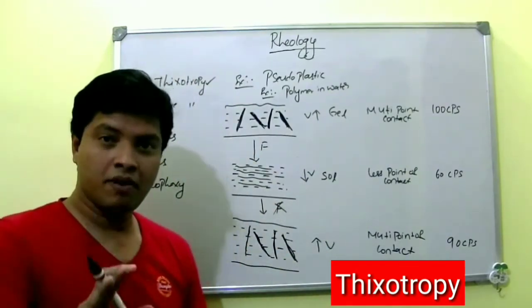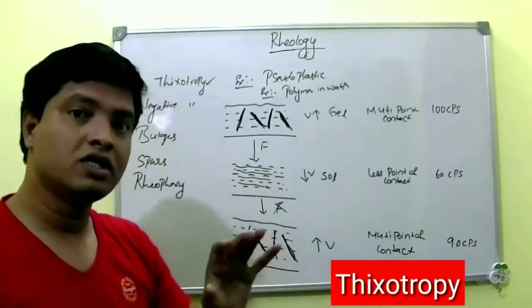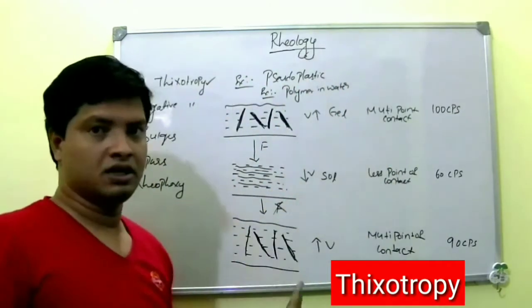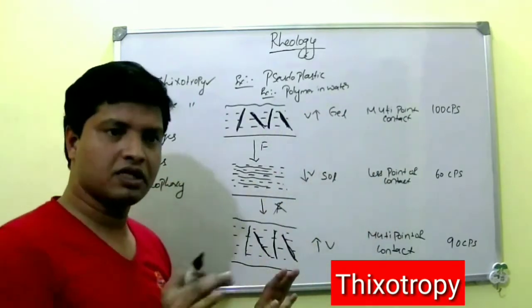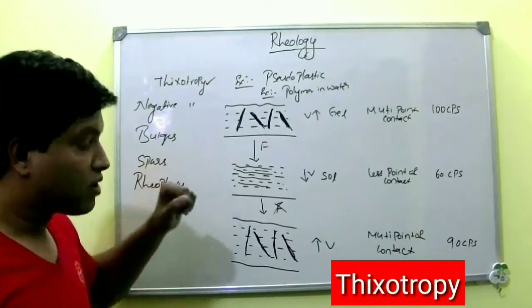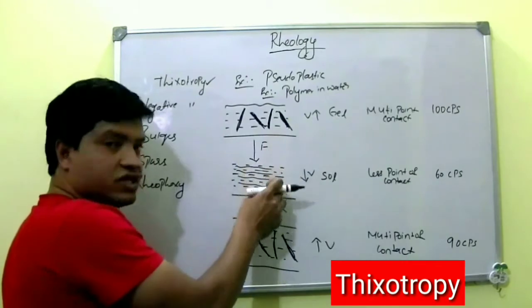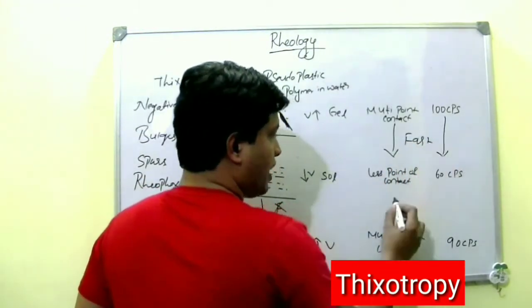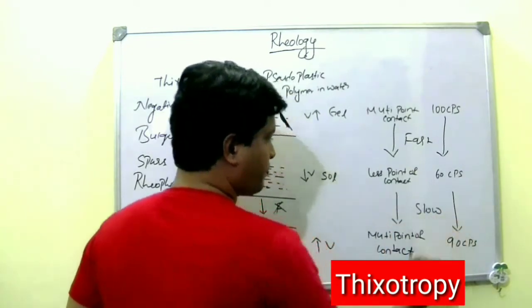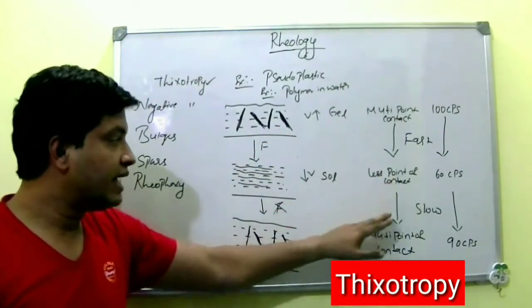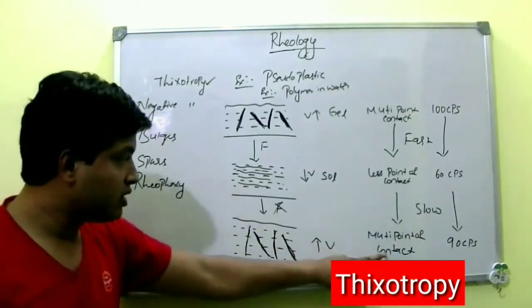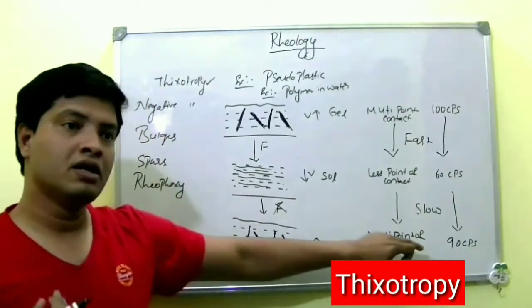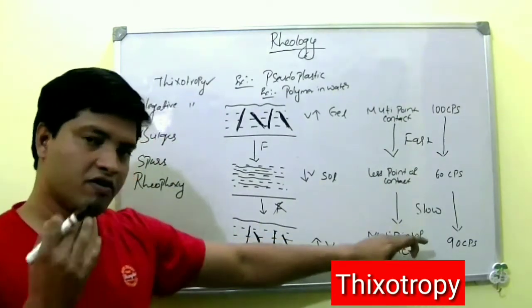The definition for thixotropy: isothermal and comparatively slow recovery of a system whose consistency is lost upon shearing. 'Isothermal' means temperature is constant throughout the experiment. 'Comparatively slow recovery' means the system loses viscosity fast when shear is applied, but gains it back slowly. 'Consistency is lost' means even after recovery, it has not fully regained its original consistency due to shearing.